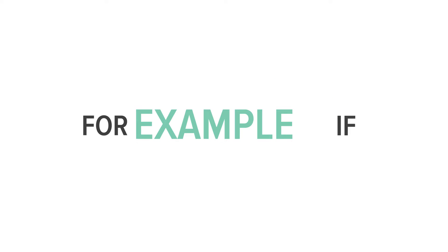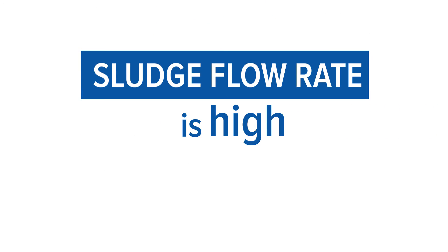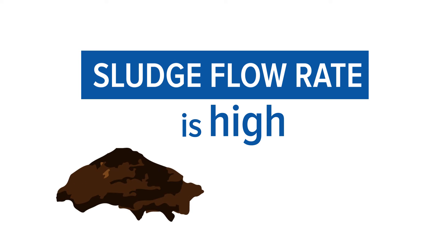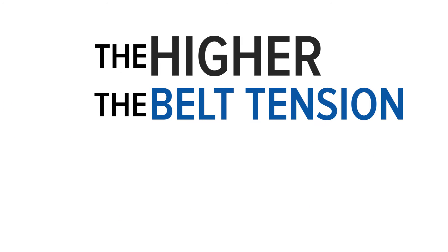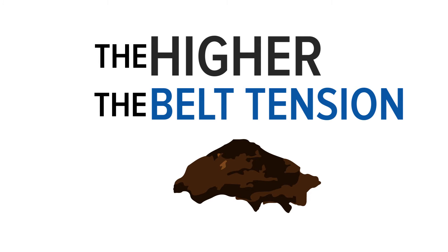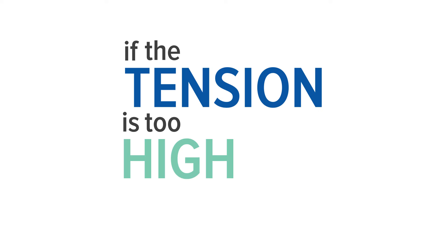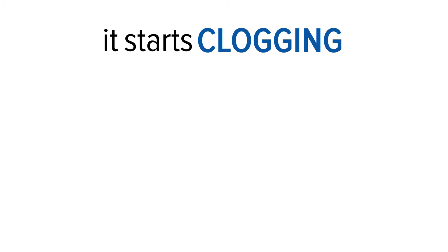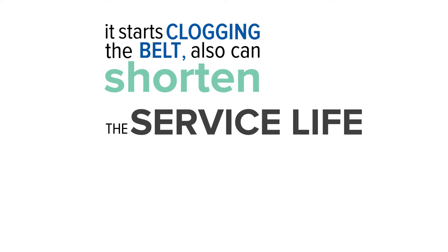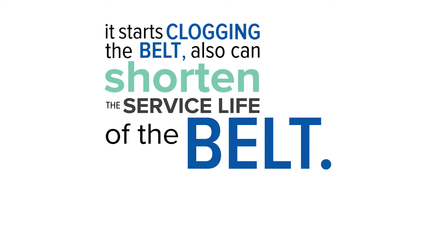For example, if the sludge feed rate is high, the solids will not be as dry. The higher the belt tension, the drier the cake will be. However, if the tension is too high, it could cause the sludge to spill out from the side, sludge clogging the belt, and it will also shorten the service life of the belt.